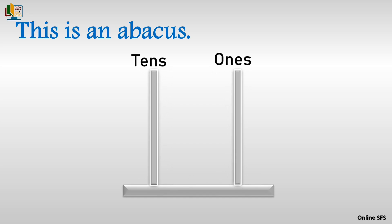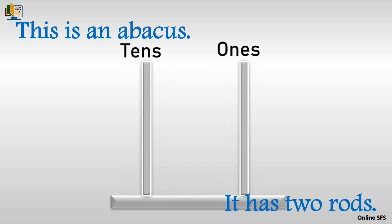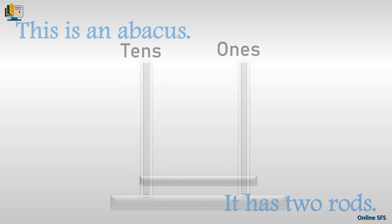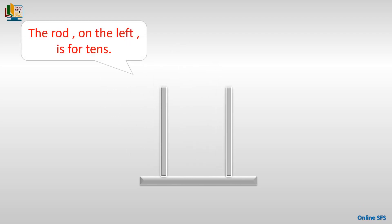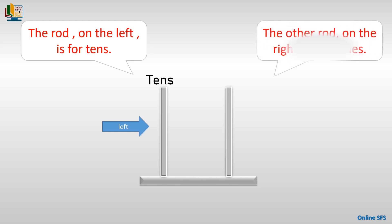This is an abacus. It has two rods — one, two. The rod on the left is for tens; this is the rod on the left hand side and it is for the tens. The rod on the right is for ones; this is the rod on the right and it is for the ones.